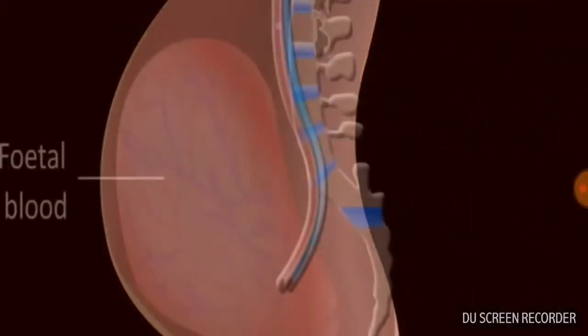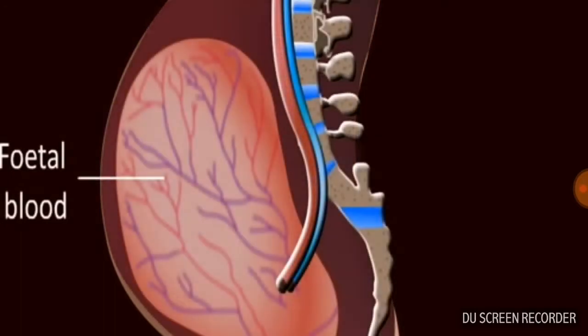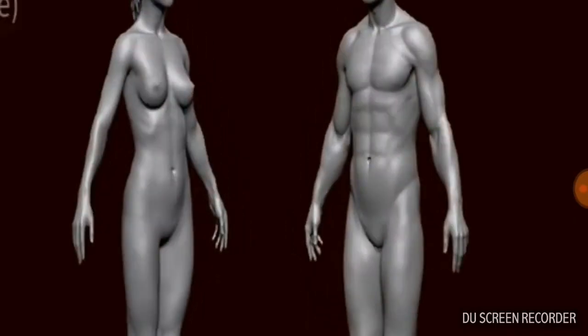Blood group incompatibility between the maternal blood and fetal blood may cause problems. The child of a homozygous RH positive male and his RH negative wife will always be RH positive.